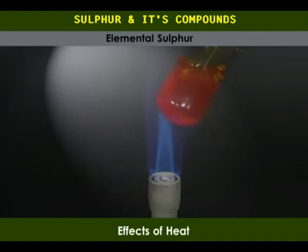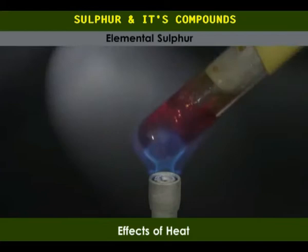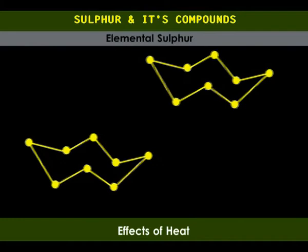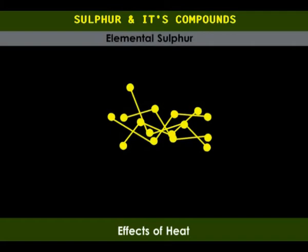On further heating, the liquid darkens, becoming reddish brown, very viscous and hardly flows. This is because as heating continues, some of the covalent bonds break, leading to the formation of long chains of atoms. The chains get entangled, causing the liquid to become viscous and dark. In fact, at some point, the test tube can be inverted without the sulfur pouring out.